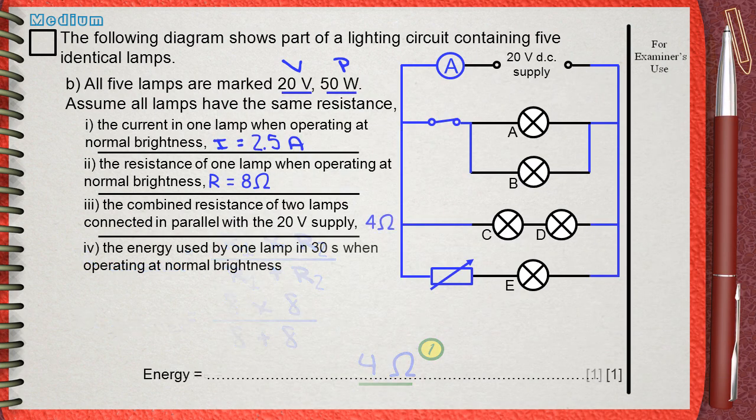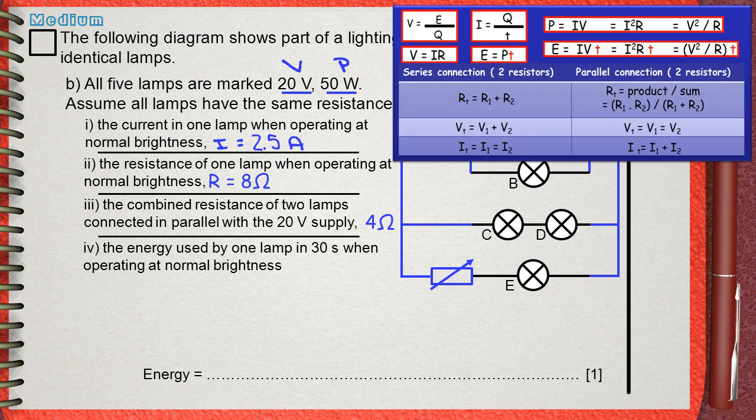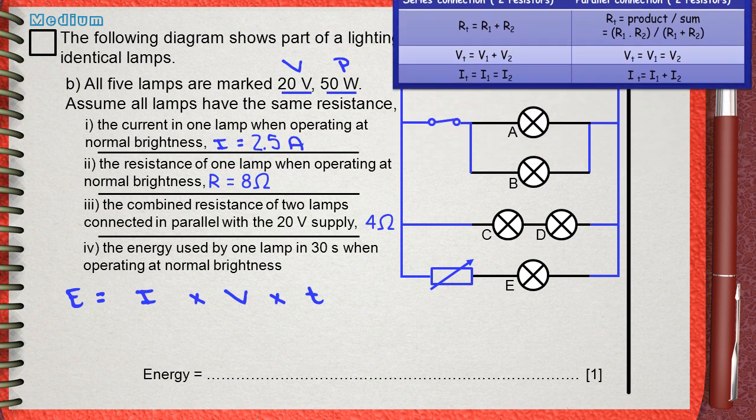Question number 4. He wants to calculate the energy used by one lamp in 30 seconds when operating at normal brightness. We always need this table of the rules. You can find that energy equals IVT. You also may find other equations useful, but I will use this one. E equals IVT.